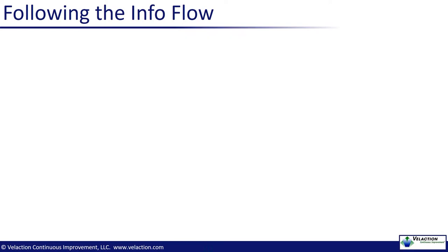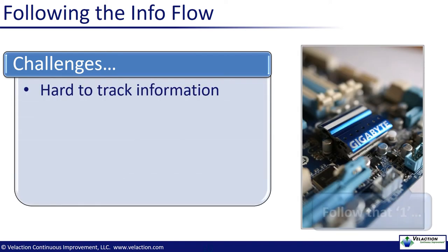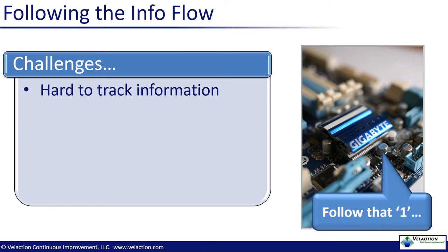On the shop floor, when doing a process walk, you're looking at a physical product. In the office, the work you're looking at is often information about a product. The information might even be the product itself. This presents a special set of challenges. First of all, the specific piece of information you're watching may be a single piece of paper in a file. Even more difficult, it may be a folder located on a network drive that is accessed by people throughout the country. You sometimes have to get creative in how you observe and record this flow of information.